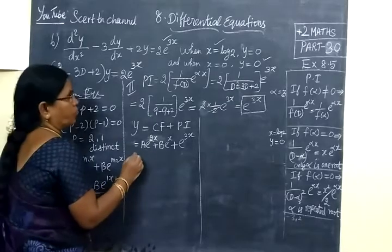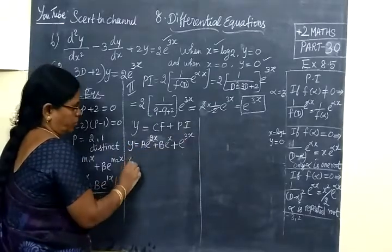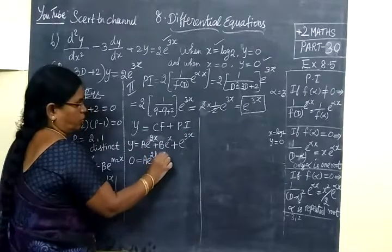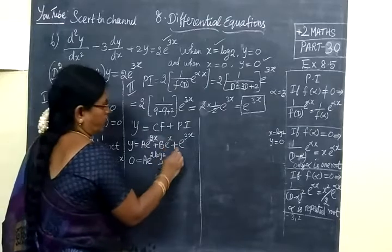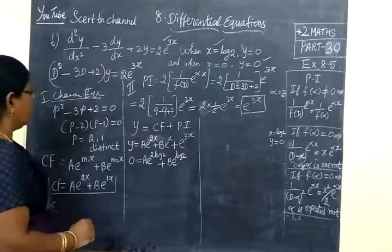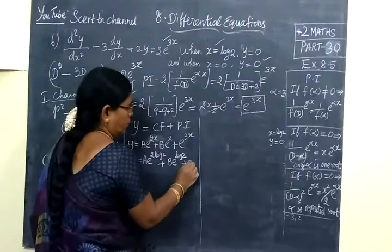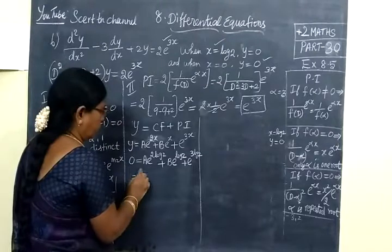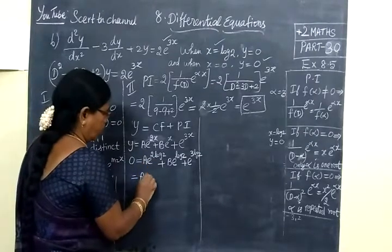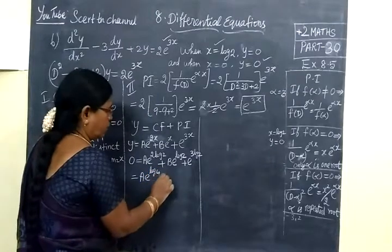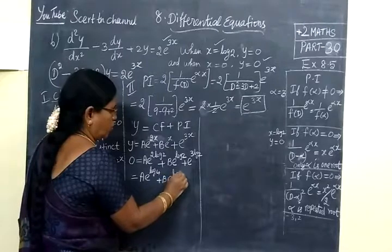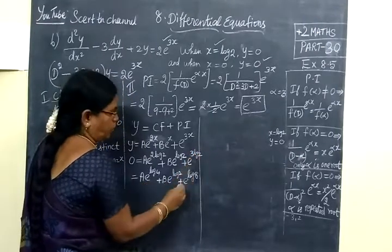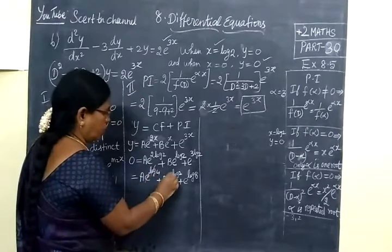From the condition, 0 = Ae^(2 log 2) + Be^(log 2) + e^(3 log 2). This is equal to Ae^(log 4) + Be^(log 2) + e^(log 8). So e log cancel, e log cancel, e log cancel.